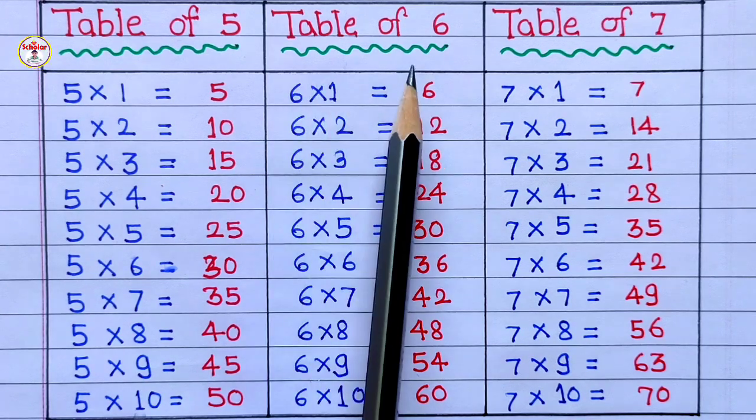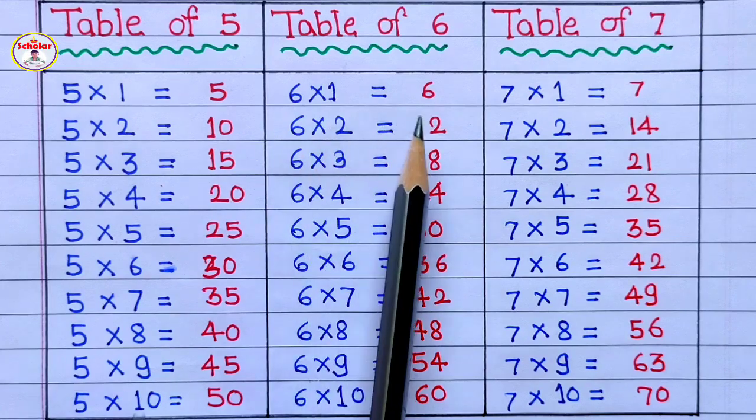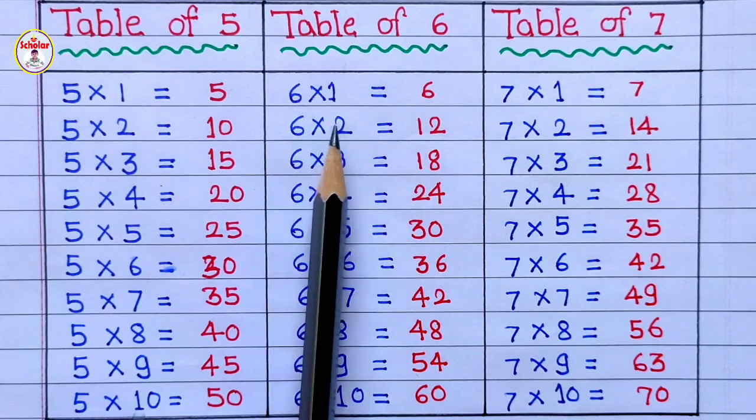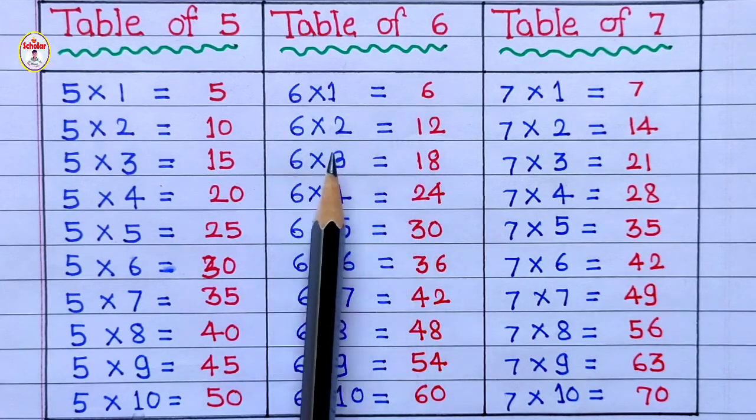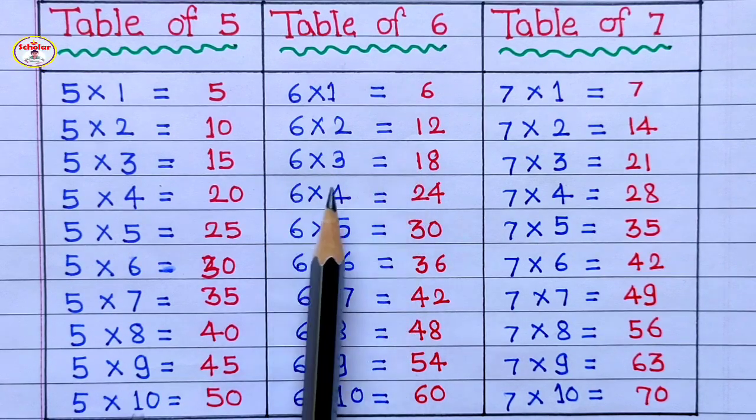Table of 6: 6 1's are 6, 6 2's are 12, 6 3's are 18, 6 4's are 24, 6 5's are 30.